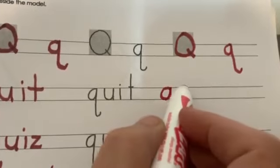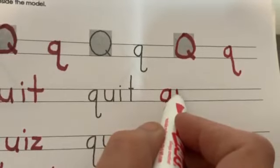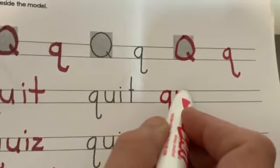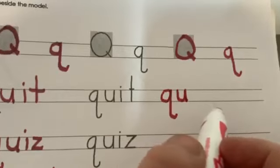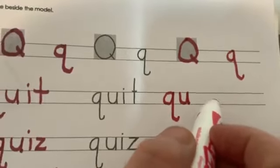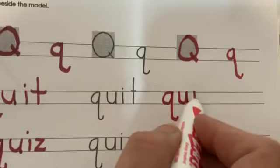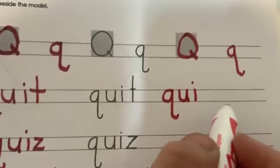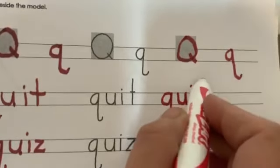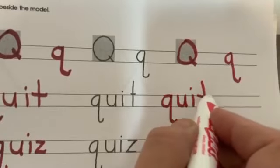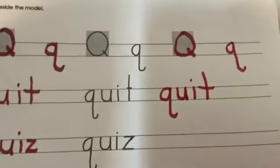U: little line down, curve up, slide down, and bump your line. I: a little line down, dot on the top. T: big line down, cross in the middle. Good job — you spelled quit!